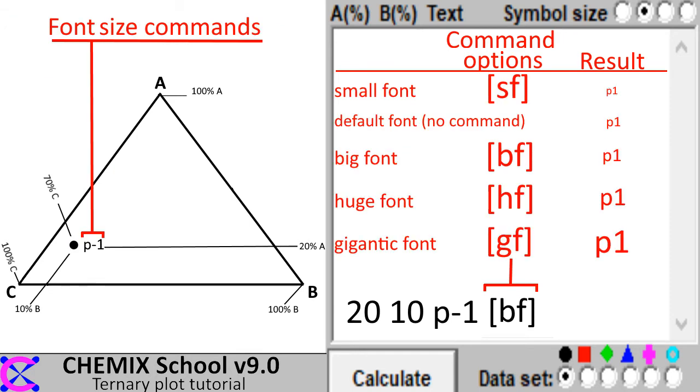To change the font size of the symbol text, enter a two letter font size command enclosed in square brackets. The options are the following: a small font, a big font, a huge font, and a gigantic font. If no text size commands are present the text will be sized as a default medium size font.